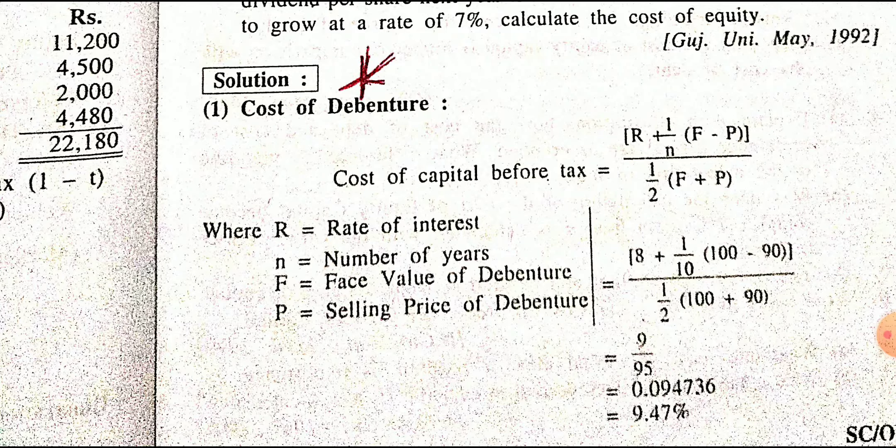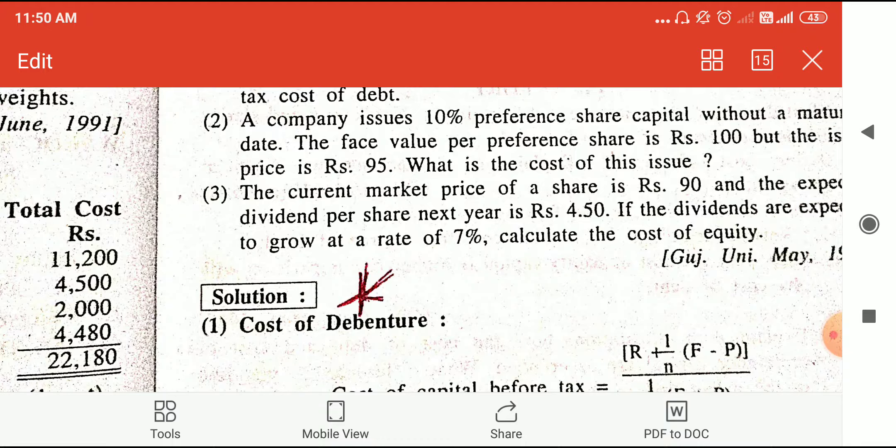For equity share, current market price of share is 90 and expected dividend information is given — so use the dividend approach. Key identification: for debenture, identify whether it is redeemable or irredeemable and apply the formula accordingly. For preference share, same rule applies. Redeemable means number of years is given; irredeemable means no maturity date or number of years is given. For equity share, if earning-related information is given use earning approach; if dividend-related, use dividend formula. Tax benefit is available only for debenture — not for other securities.